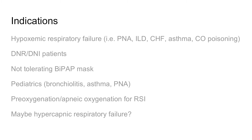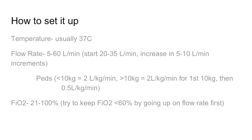So how to set up — there are just three settings. Temperature is usually set to 37 degrees Celsius. Flow rate is five to 60 liters. It was hard to find a standardized protocol, so this suggestion is from UpToDate. Starting in adults, 20 to 35 liters a minute, then increase every couple of minutes by five to ten liters. The FiO2 can be room air to 100%. Similar to ARDS settings, you don't want to give too much oxygen, so go up on the flow rate first, and if you're not seeing a response, start creeping up on the FiO2, but generally don't make it higher than you need to.